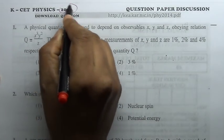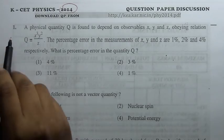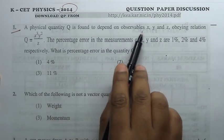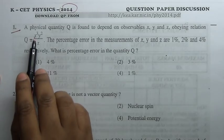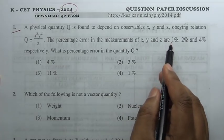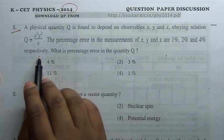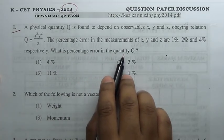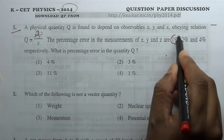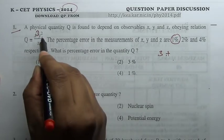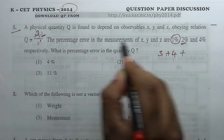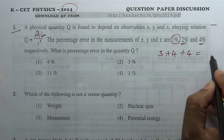Hello, it's 2014 paper K-CET. First question: a physical quantity Q is found to depend on observables x, y, z obeying the relation x cube y square by z. The percentage error in the measurement of x, y, z are 1 percent, 2 percent, and 4 percent respectively. What is the percentage error in the quantity Q? Okay, now this is 3 into 1 percent is 3, plus 2 into 2 is 4, plus 1 into 4 is 4, equal to 11. Answer is 11 percent.